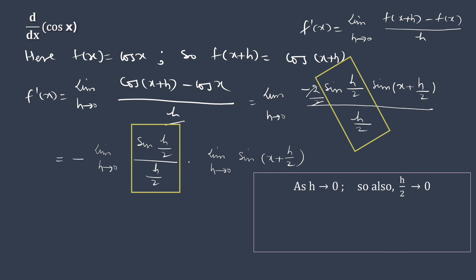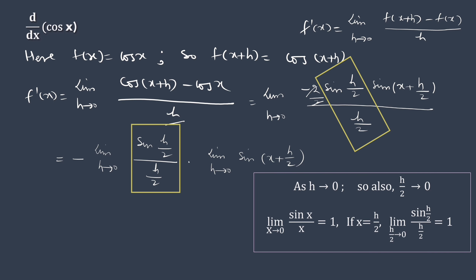When h goes to 0, h over 2 also goes to 0. Thus we can again use this important limit: limit x tends to 0, sine x over x equals 1. Putting x equals h over 2, we get. Here, the first limit equals 1, while the second equals sine x. Thus the final limit is minus sine x.